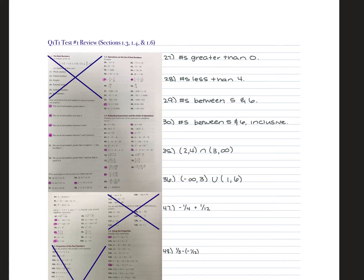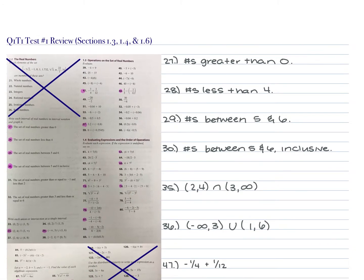For 27, we have the real numbers greater than 0. What's your smallest number? Zero. What's the largest? Infinity — infinity automatically gets a parenthesis. Are we including 0? Is it also equal to? No, so the parenthesis goes on that also. Parentheses are used on a number that's not included. Brackets are used when the number is included or equal to — the word 'inclusive' is a dead giveaway that we use brackets.